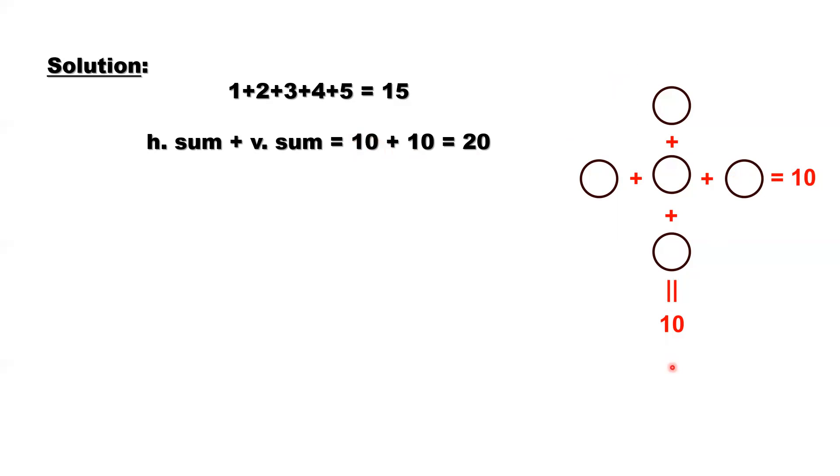Vertically should be 10. So the sum of two sums, horizontally and vertically, add them together equals 20. Now what's the difference between the two numbers, 20 and 15?